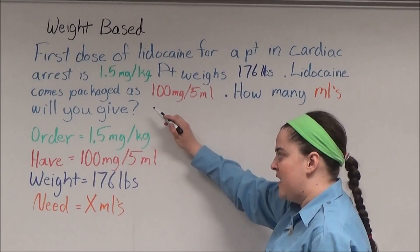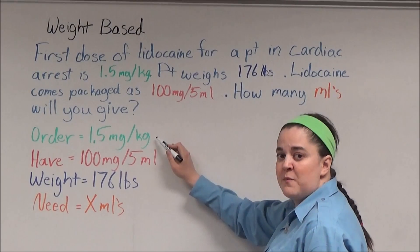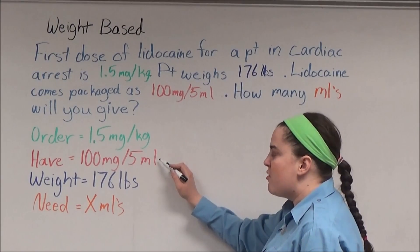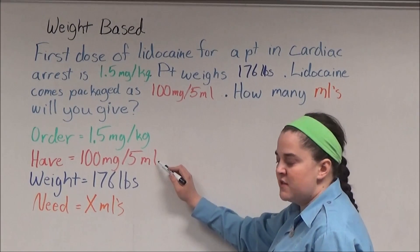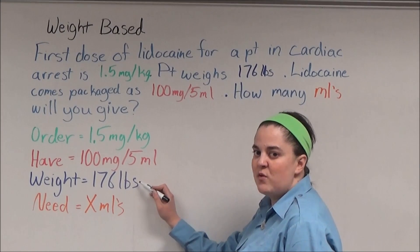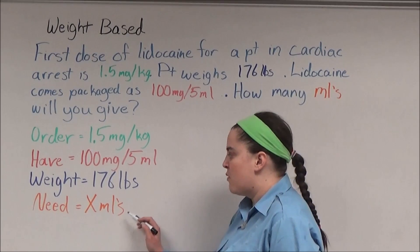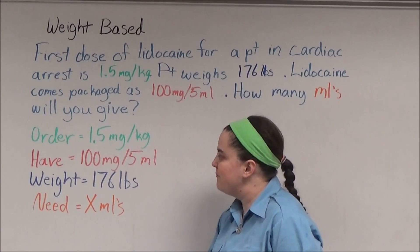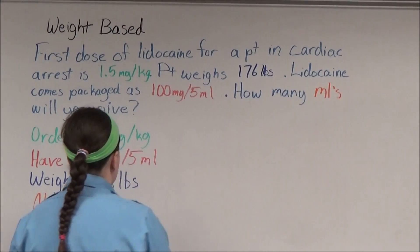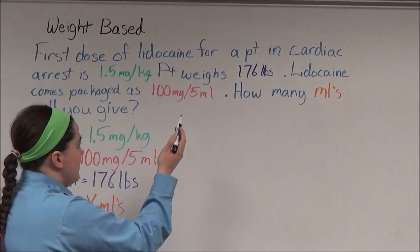The first thing that I do is I write down my order — 1.5 milligrams per kilogram — what I have on hand — 100 milligrams in 5 milliliters — the patient's weight — 176 pounds — and what I need, which is an unknown number of milliliters represented by x. The first thing I need to do is convert 176 pounds to kilograms.